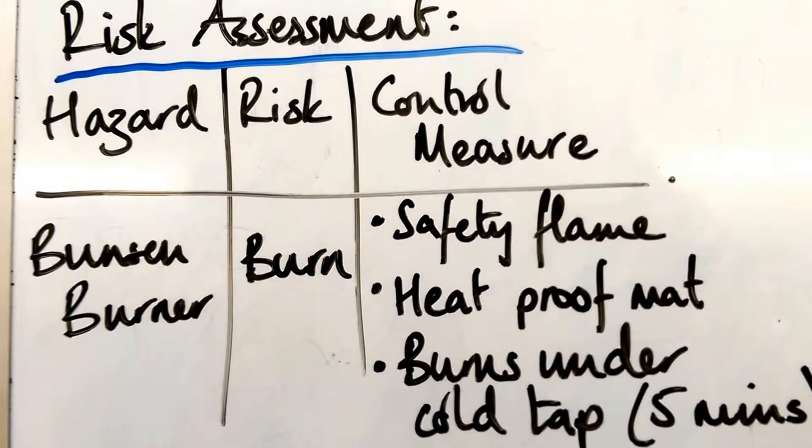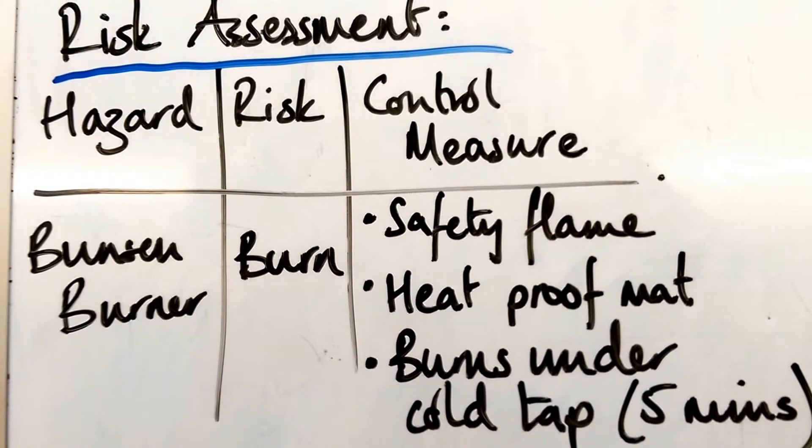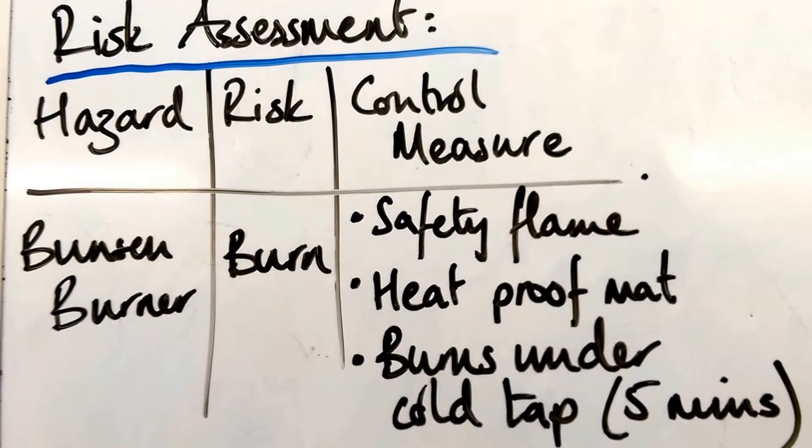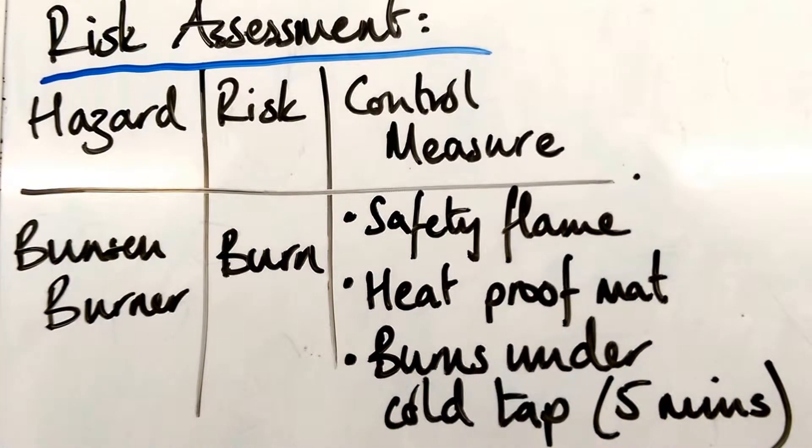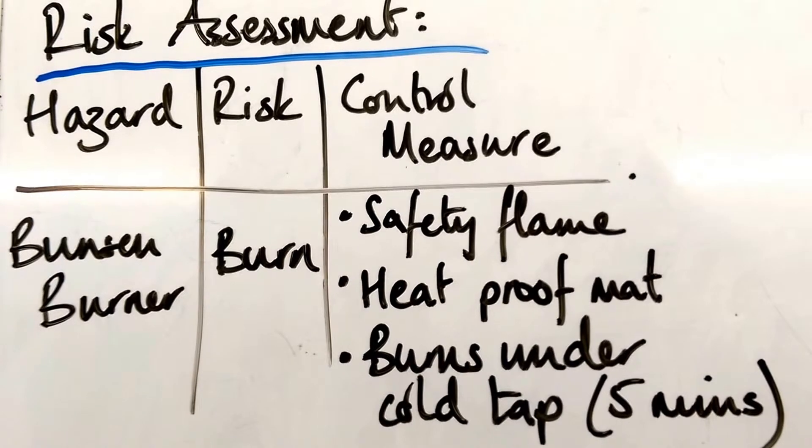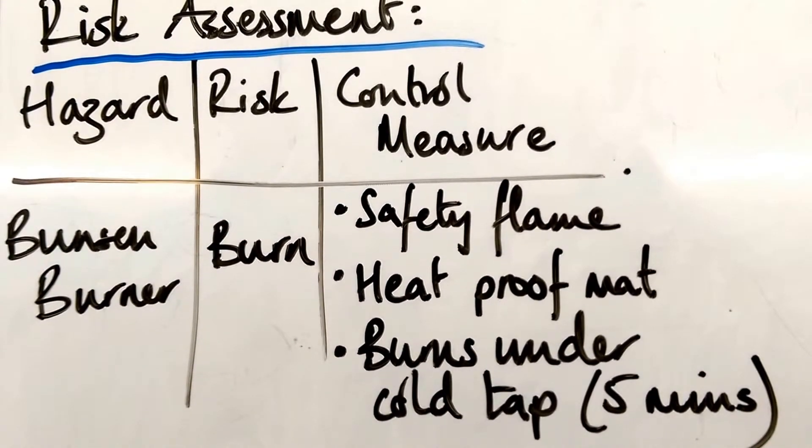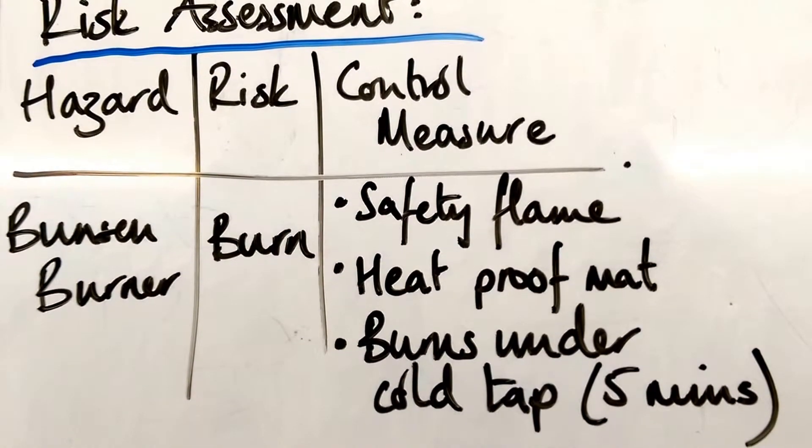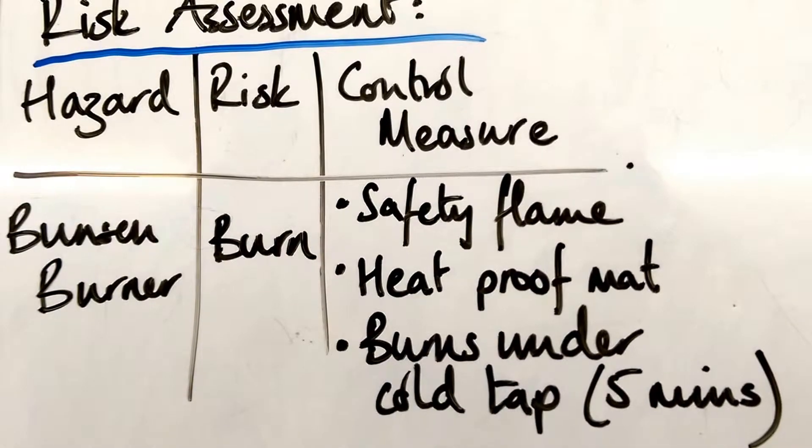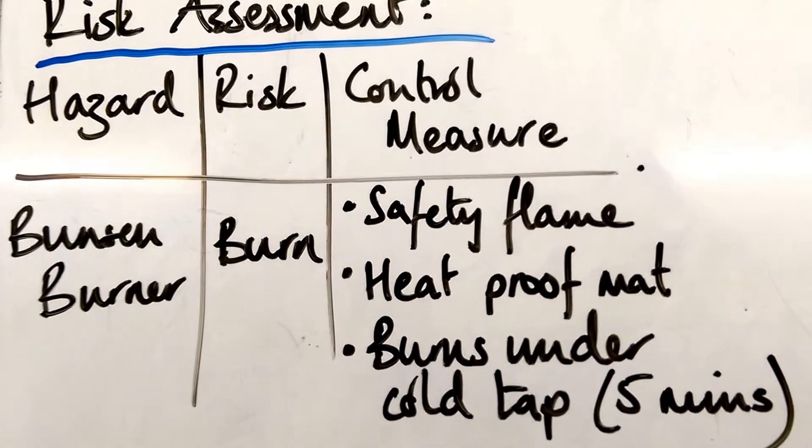So, one example of a hazard in this one, would be using a Bunsen burner. The risk, is that you could be burned. The control measure is to use it on the safety flame. Use a heat proof mat under it. And if you do get a burn, wash that burn underneath the cold tap, for at least five minutes.